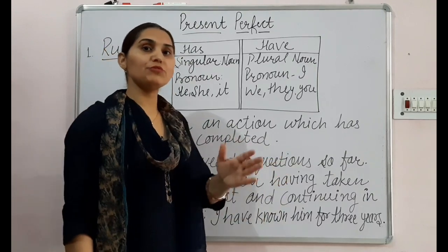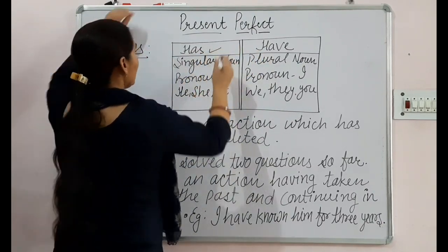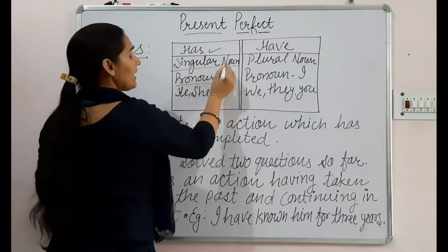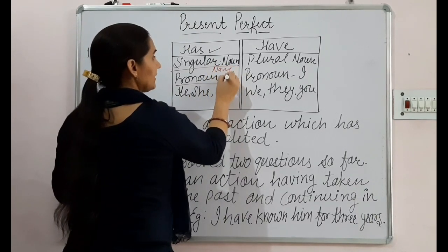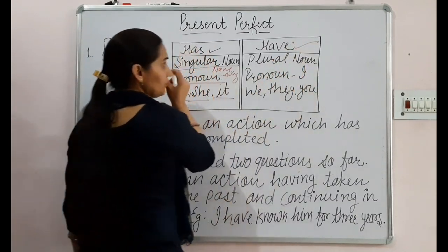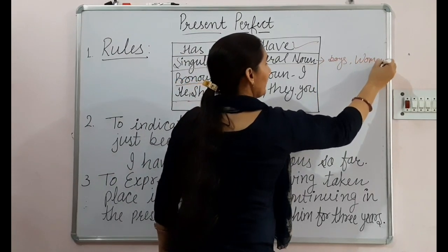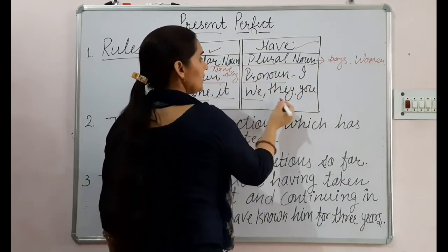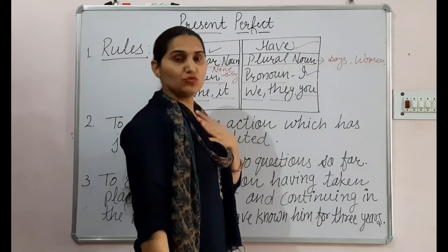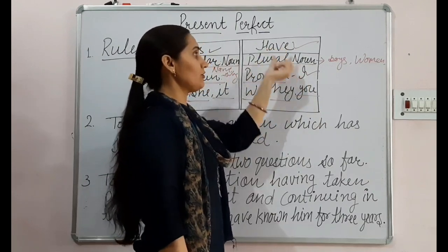Now, when do we use 'has' and when do we use 'have'? 'Has' is used with singular nouns and singular pronouns such as he, she, and it. 'Have' is used with plural nouns like boys and women, and plural pronouns like we, they, and you. As for 'I' — although it refers to one person, it always takes 'have', not 'has'.